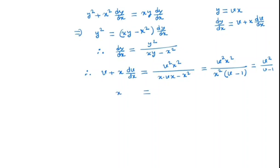So we have x dv dx is nothing but v squared by v minus 1 minus v. By simplifying we get v minus 1 times v squared minus v squared which is equal to v minus 1.